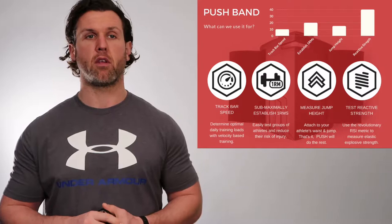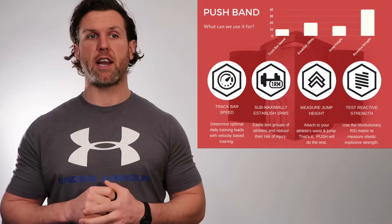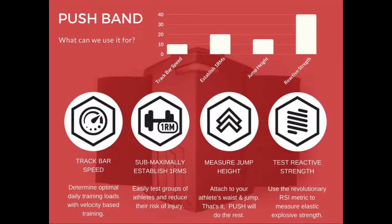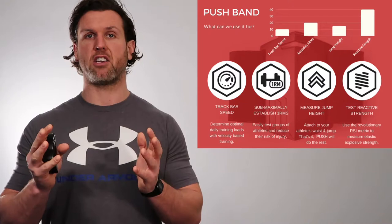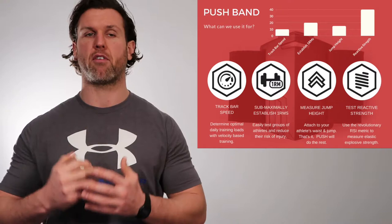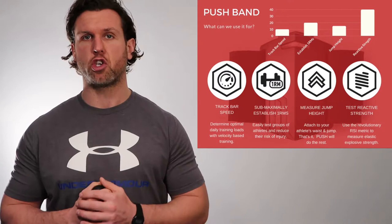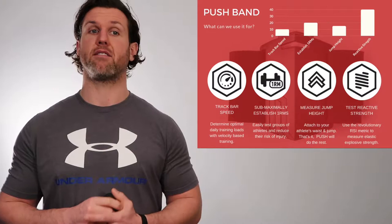We normally get our athletes to wear the PUSH band on a Thursday and Friday when they're doing ballistic-type velocity-based training. This allows us to track their bar speed. The PUSH band is also very good for establishing 1RMs — say if we have a golfer who can't do a 1RM, by doing a 3 or 5 repetition max with the PUSH band, it will give us an established 1 repetition max. The PUSH band is also very good at monitoring athletes from a jump perspective — counter-movement jumps, squat jumps, loaded squat jumps for readiness to train, and depth jumps for reactive strength index.